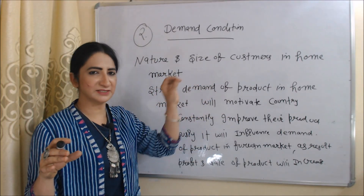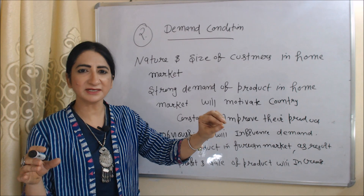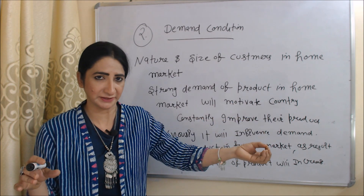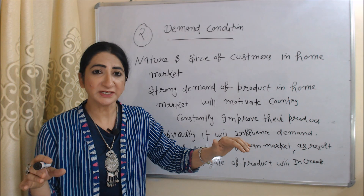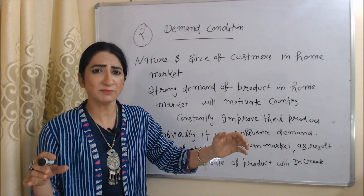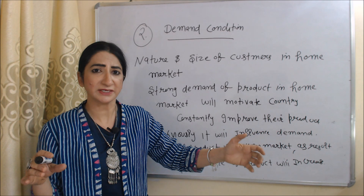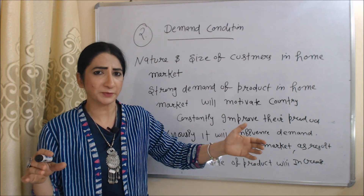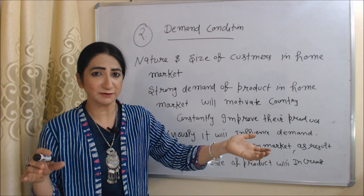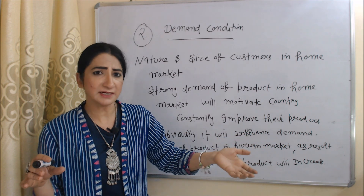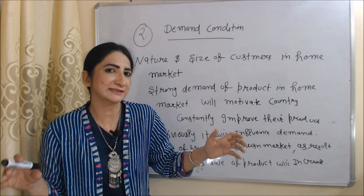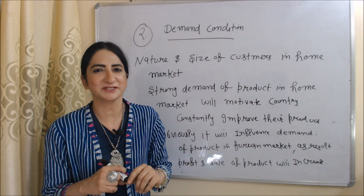The second is demand condition. Demand condition means the nature and size of customers in the home market. If a country has strong demand for a product in its home market, it will motivate the country to constantly improve their products. Obviously, it will influence their demand in the foreign market. As a result, sales and profit will increase and the country will get success at the international market.